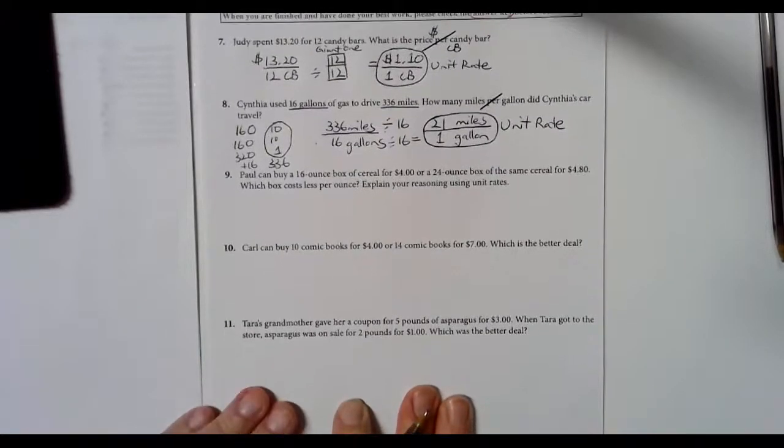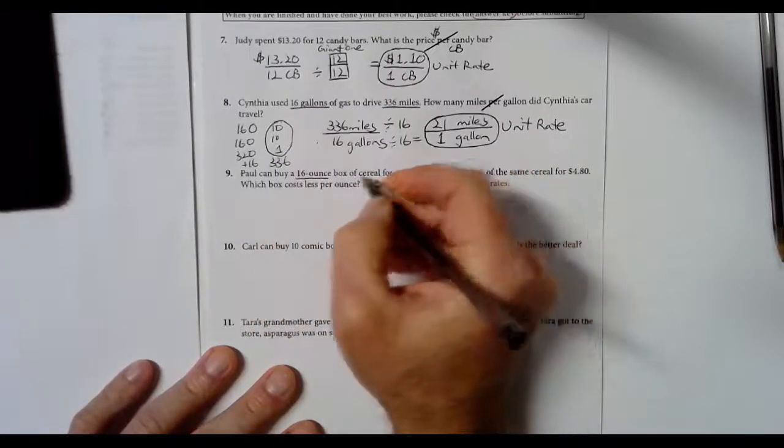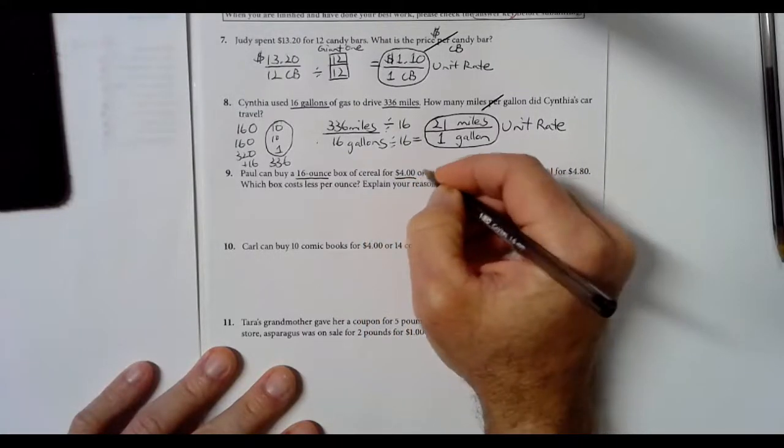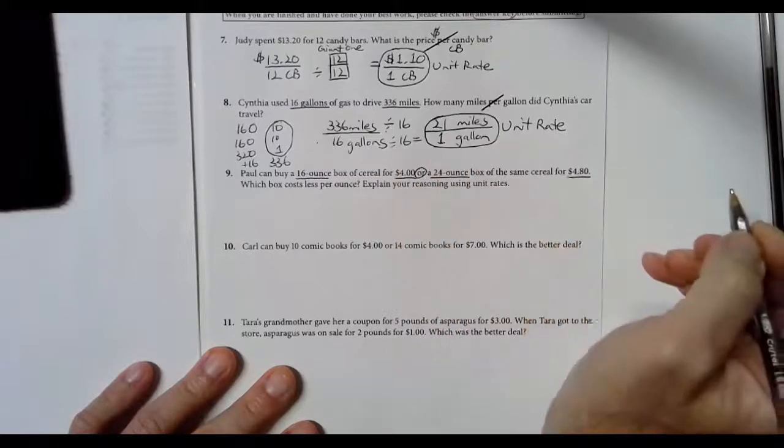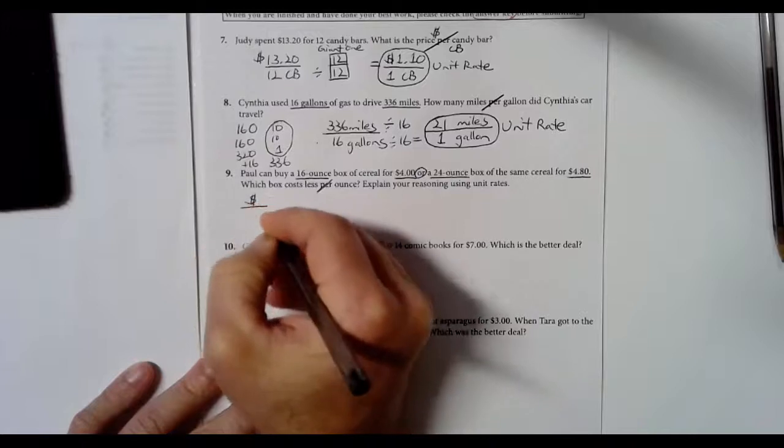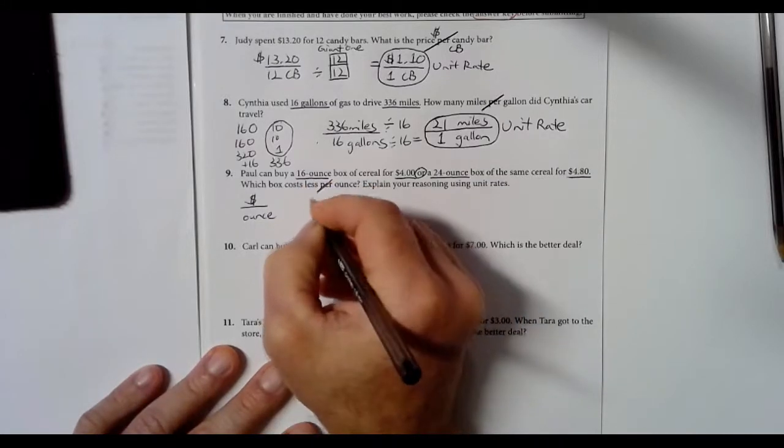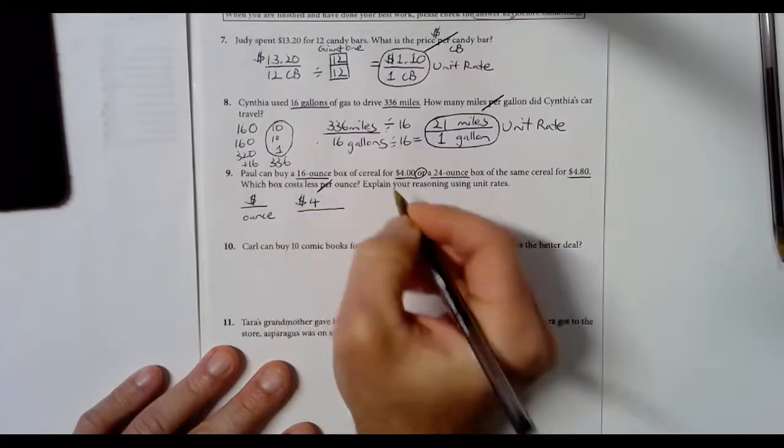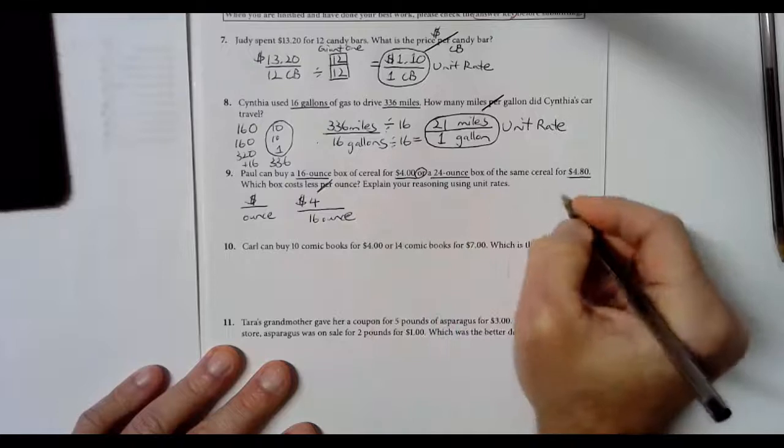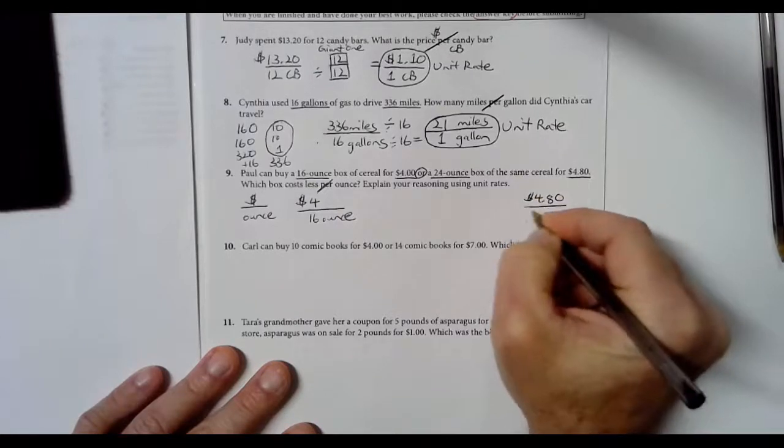So 16 ounces for $4 or 24 ounces for $4.80. Cost per ounce, which means dollar sign over ounces, that's the order we want. The first one is $4 for 16 ounces, and the second one is $4.80 for 24 ounces.